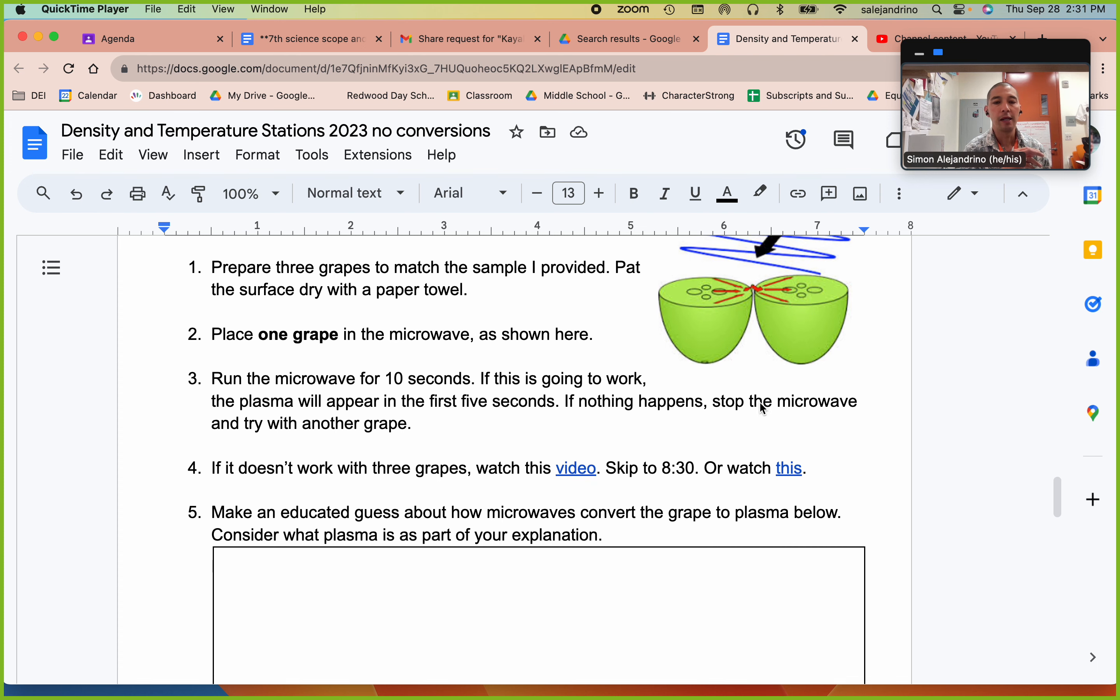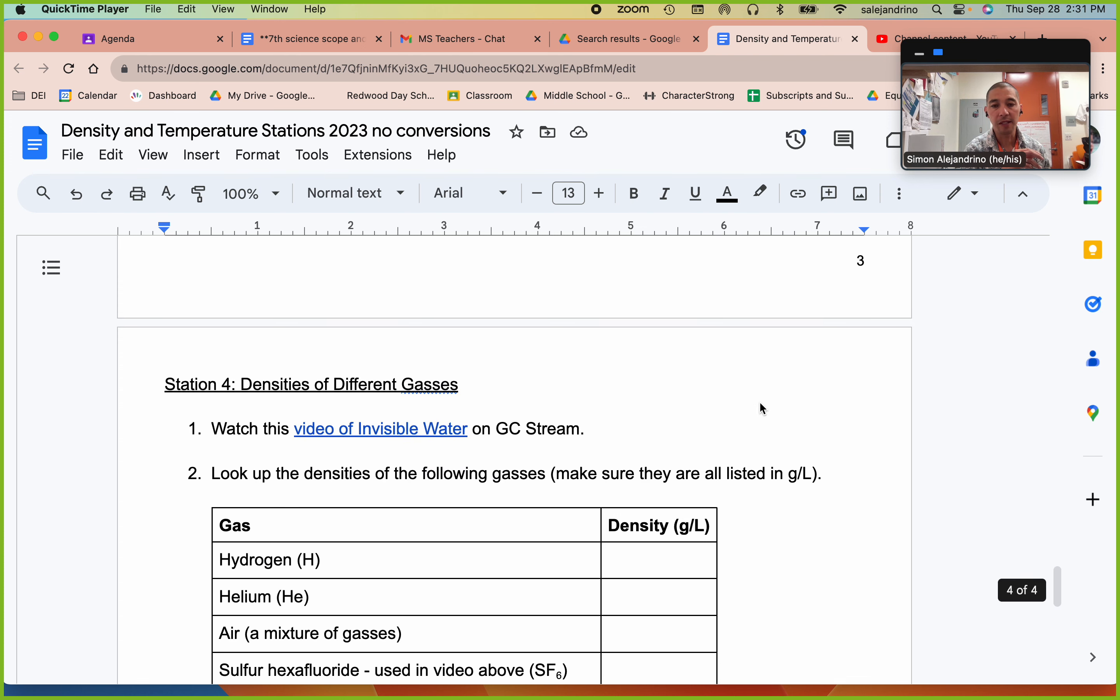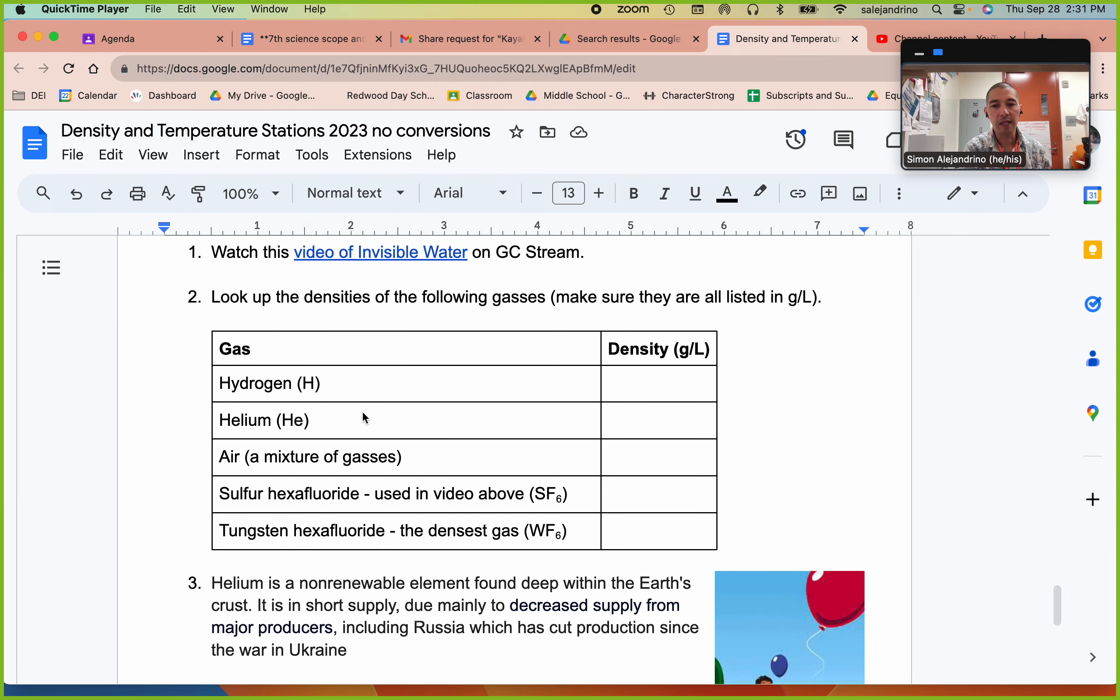Lastly, densities of different gases. What you would have seen is that helium and hydrogen are both gases that are not very dense at all. They're actually the two least dense gases in the periodic table.